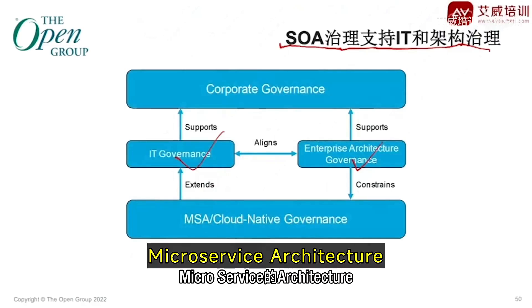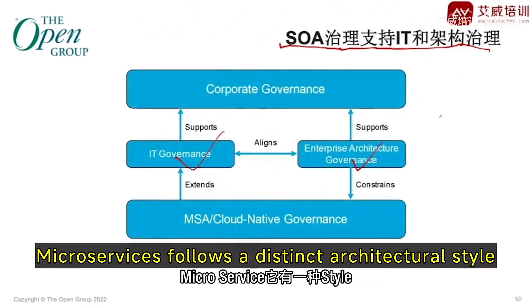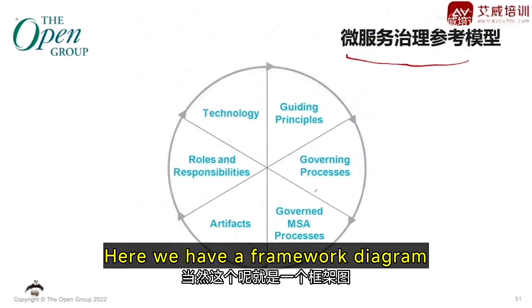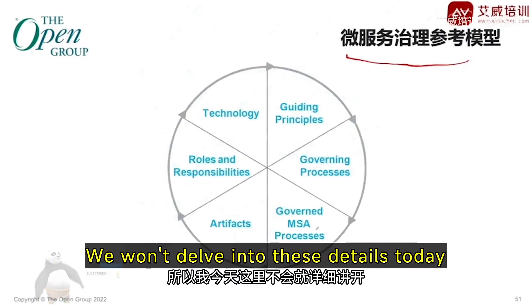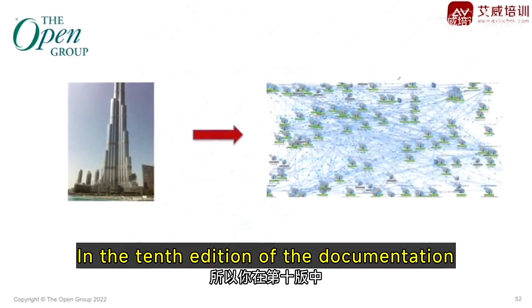Microservice architecture follows a distinct architectural style. This is the reference model for microservices governance. Here we have a framework diagram — it encompasses numerous underlying concepts, which we won't delve into in detail today.